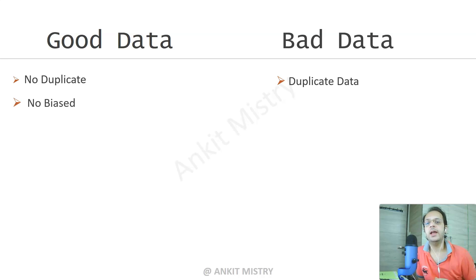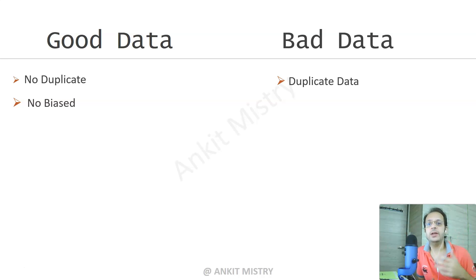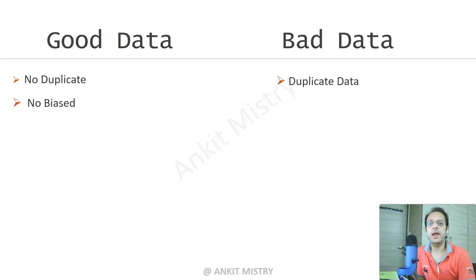The next characteristic is 'not biased.' When you are collecting data, let's say your data has a relationship with geography or gender. For example, if you are trying to find the average height of any person in the United States — which is independent of male or female — and you collect a sample of 1 million for male and just half a million for female, your data has become biased.